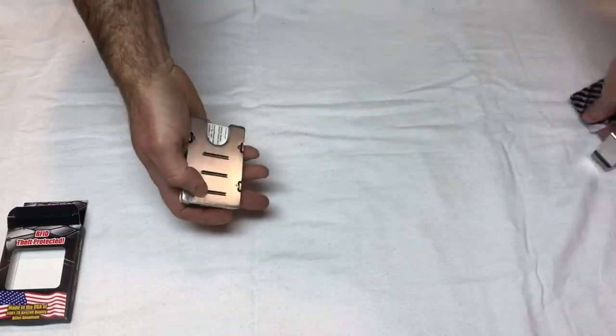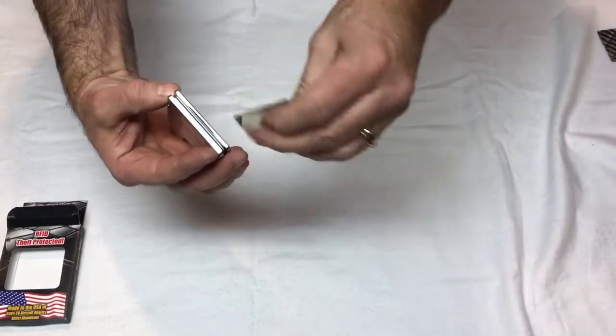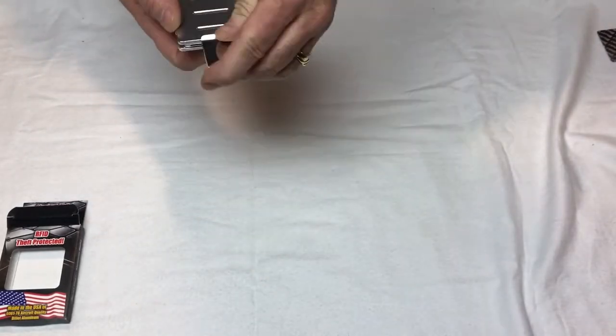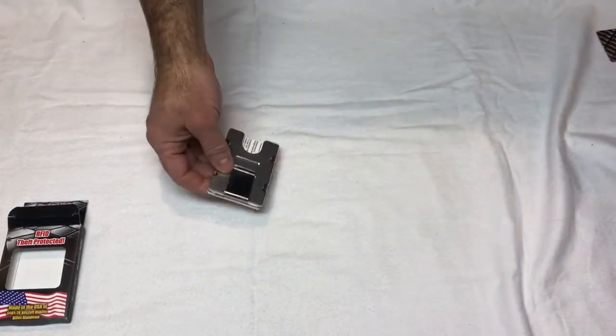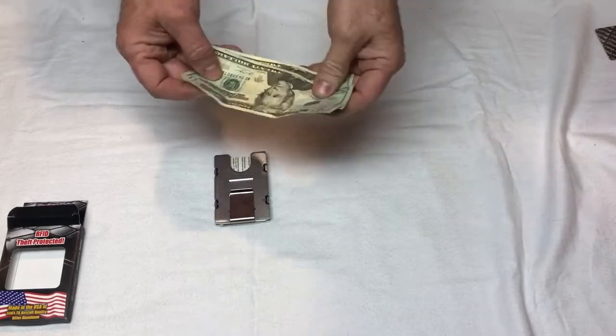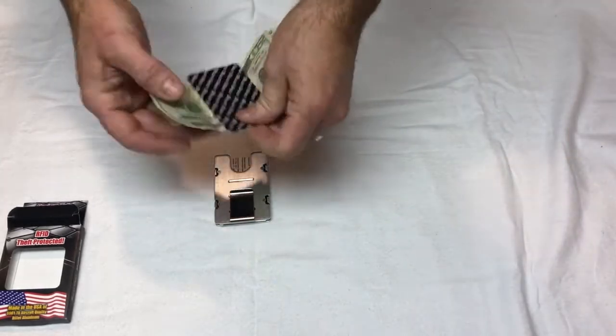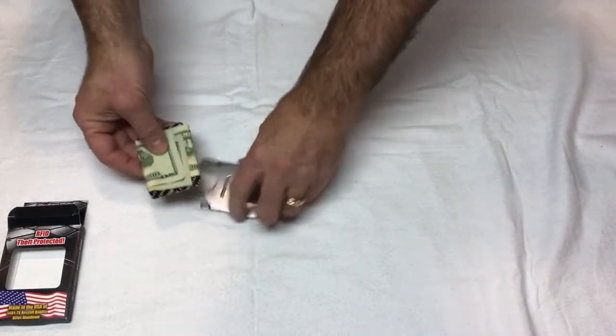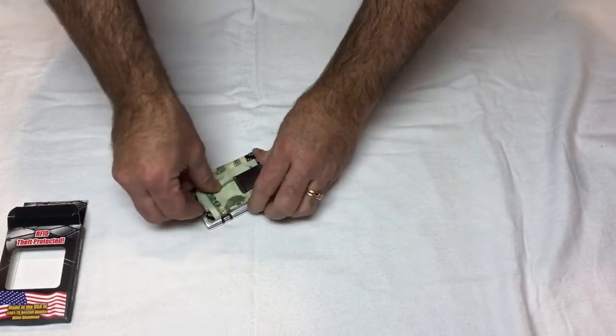To add the money clip, there's a slot on the top for the money clip. You slide the money clip in. You take your money, wrap it around the card that's included, and you slide that on the money clip like that.